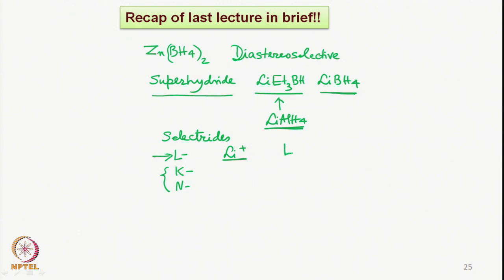Therefore, L-selectride is the reducing agent of choice, in which we have the secondary butyl group as a bulky substituent on the lithium borohydride-based reducing agent. L-selectride is obviously the choice for reductions in which high diastereoselectivity is expected, and we saw some examples. These are used only in cases where high diastereoselectivity is required at low temperature.